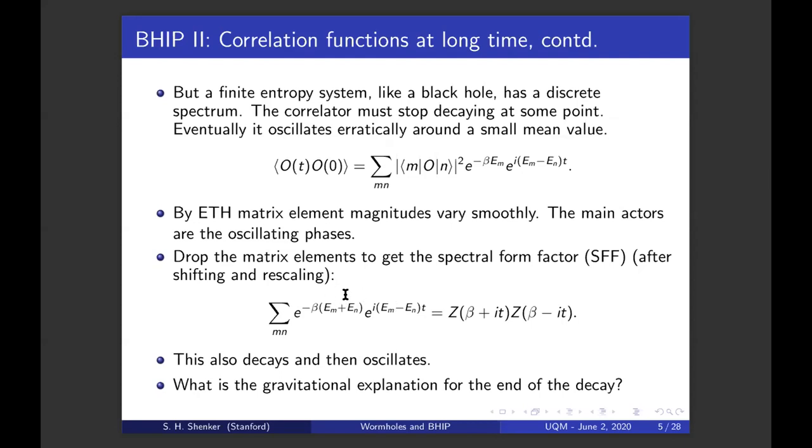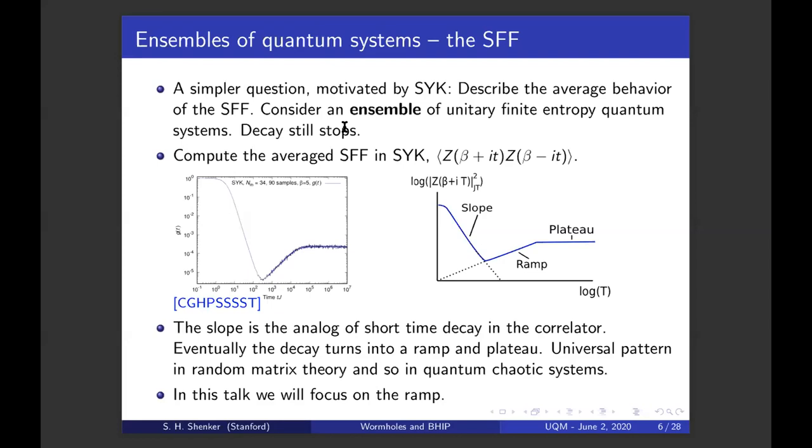Symmetrize the Boltzmann factors to control things. And you can see that this is the product of two partition functions where beta is continued plus it and minus it. And this also decays and oscillates. And so we can ask, what is the gravitational explanation for the end of this decay? And unfortunately, we don't know the answer to that particular question. It's quite complicated and it's very difficult.